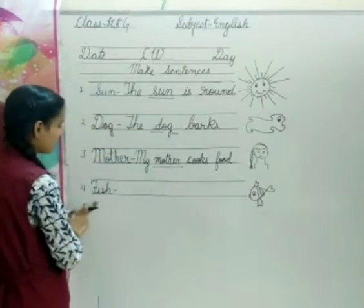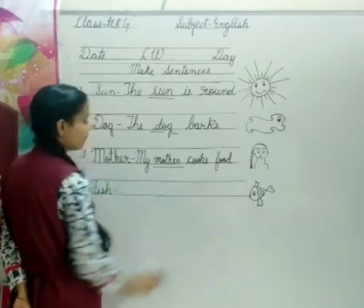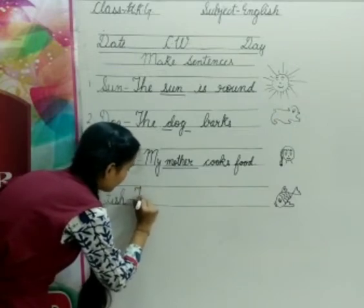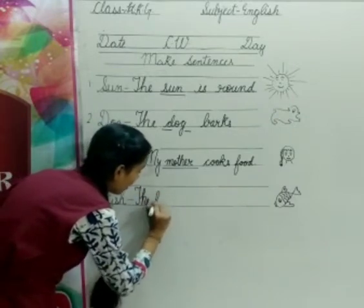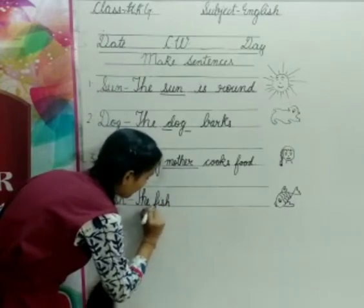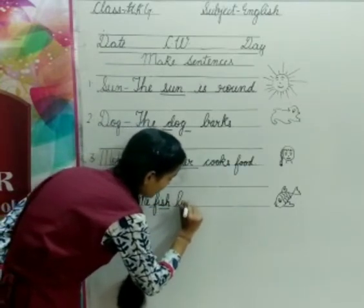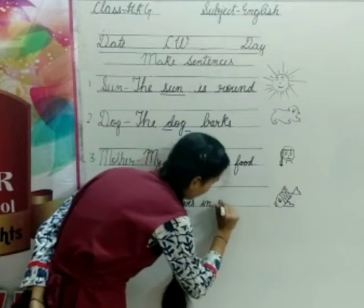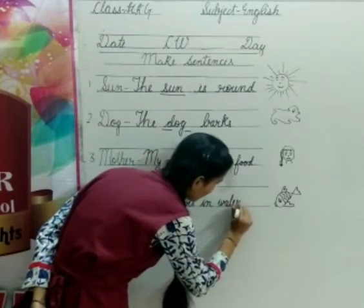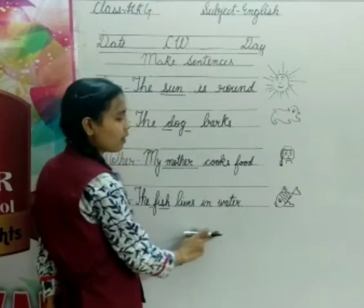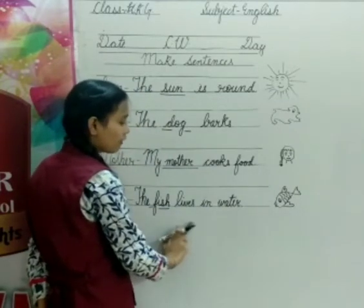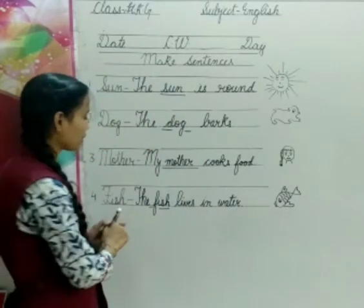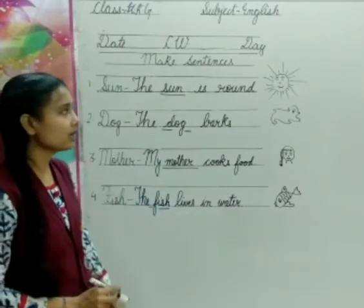Now our last example is F-I-S-H, fish. Fish needs water. So here sentence is the fish, the fish lives, L-I-V-E-S lives, in water, W-A-T-E-R water. The fish lives in water. Fish, water mein lives means rehti hai. Fish ka ghar hai water.